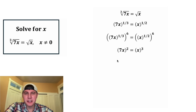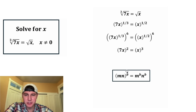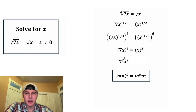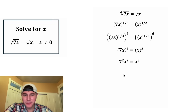Now to simplify the left hand side, we're going to use these notes here. This says the quantity m times n to the b is m to the b times n to the b — the b distributes to both. So this quantity of 7x squared can be rewritten as 7 squared times x squared, and that's still equal to x cubed.